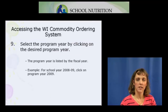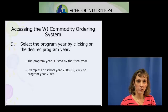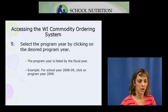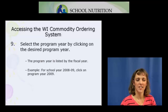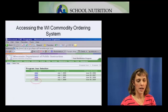Once you've clicked on the Continue button, you will be asked to select a program year. It's important to note that in this system, the program year is listed by fiscal year, which starts from July 1 each year and goes through the following June 30th. For example, if you're trying to access school year 2008-09, you would click on program year 2009. This is a copy of what you would select for 2009.